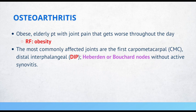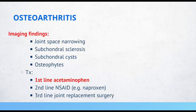Imaging of osteoarthritis may reveal joint space narrowing, subchondral sclerosis, subchondral cysts, and osteophytes. First-line treatment includes acetaminophen, second-line treatment includes NSAIDs such as naproxen, and third-line treatment is joint replacement surgery.